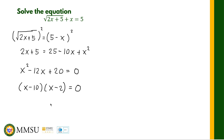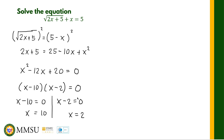We solve this quadratic equation using factoring. The factors of 20 are 10 and 2, so the factored form is (x minus 10)(x minus 2), because negative 10 plus negative 2 equals negative 12, which matches the middle term. By the zero factor theorem, we equate each factor to zero: x minus 10 equals 0 gives x equals 10, and x minus 2 equals 0 gives x equals 2. So as per the quadratic equation, there are two candidate solutions.